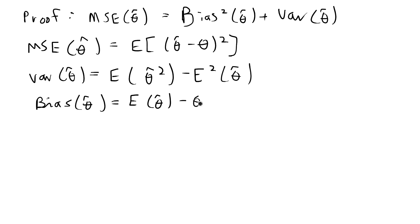In this case theta, wherever we see it, is a parameter and is considered to be a constant rather than a random variable, but the estimator theta hat is going to be a random variable. Using these expected value equations for MSE, variance, and bias, I'm going to decompose the expected value definition of MSE and try to get it into a form equal to the variance plus bias squared.